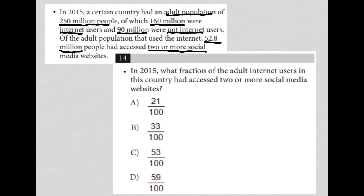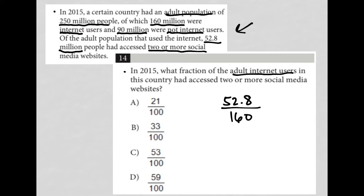Question 14 asks: in 2015, what fraction of the adult Internet users in this country had access to two or more social media websites? We know from the information that there are 52.8 million Internet users who accessed two or more social media websites. We're looking for the fraction out of the total adult Internet users, so that would be 52.8 million out of the 160 million Internet users. So here's our fraction.